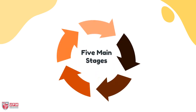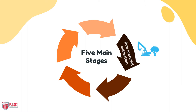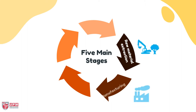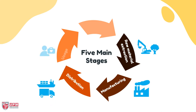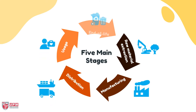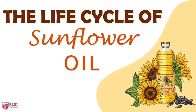There are five main stages for this framework. The first stage is raw material extraction, the second stage is manufacturing, the third stage is distribution, the fourth stage is usage, and the fifth stage is end of life.